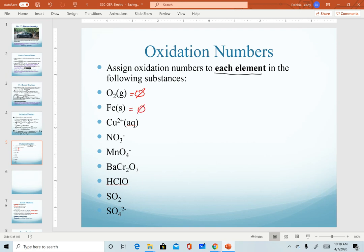Notice, for example number three, we are given the ion form of copper. So that can't be zero. That's not the elemental form. But since the charge is already given, we already know the oxidation number on that ion. So the charge matches the oxidation number.